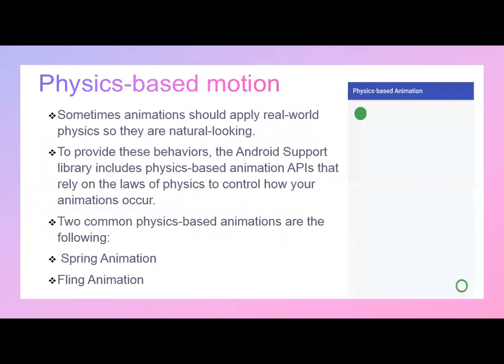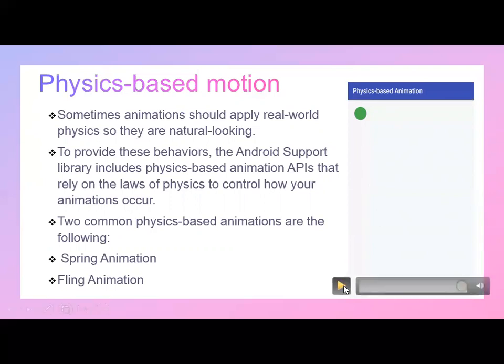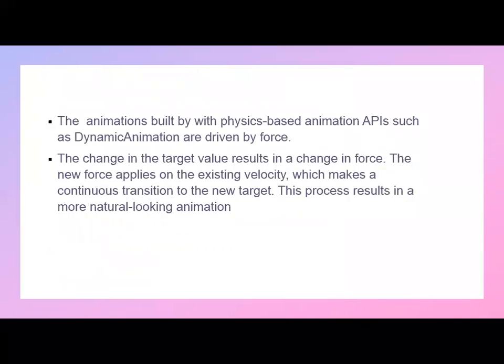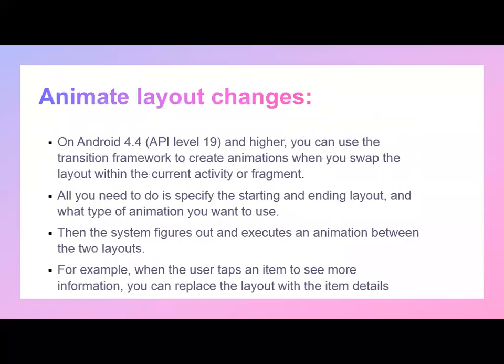Next is physics-based motion. Sometimes animations should apply real-world physics to look natural. To provide these behaviors, the Android support library includes physics-based animation APIs that rely on the laws of physics to control how your animation occurs. The two common physics-based animations are spring animation and fling animation. Animations built with physics-based animation APIs such as the dynamic animation are mostly driven by force. The change in target value results in a change in force, and the new force applies to existing velocity, making a continuous transition to the new target — resulting in more natural-looking animations.